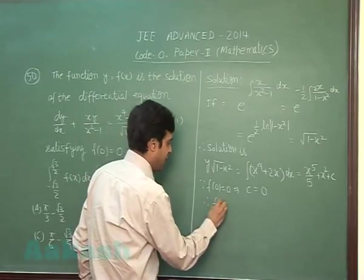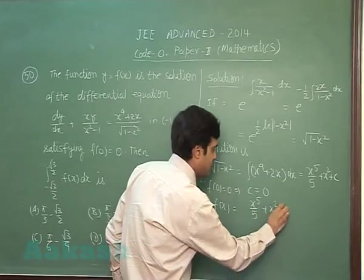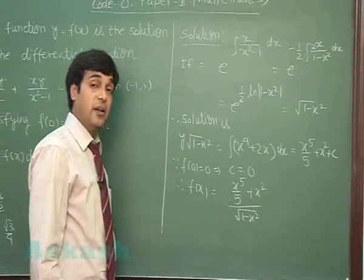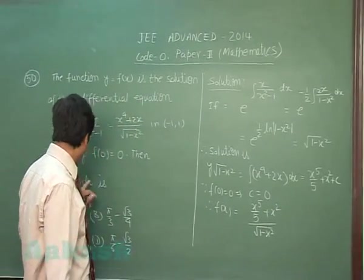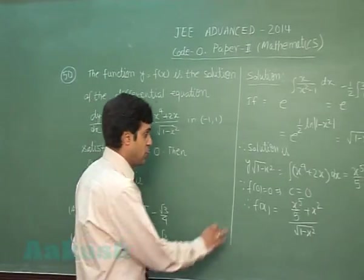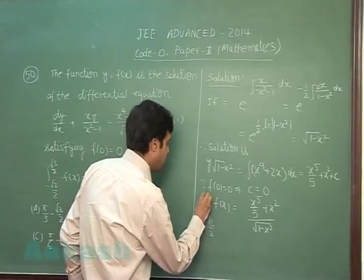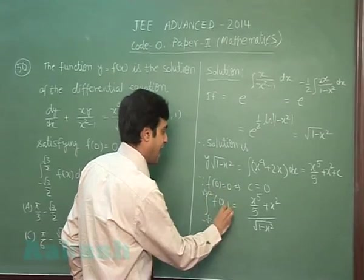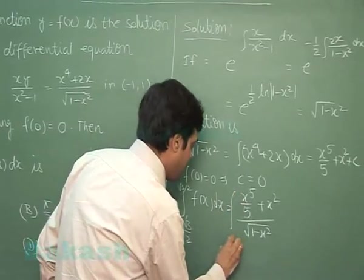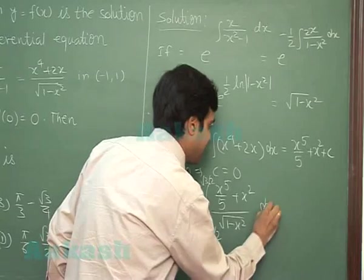Hence, the function f(x) is simply (x⁵/5 plus x²) divided by root of (1 minus x²). Now, the question is integral of this function within the boundaries minus root 3 by 2 to plus root 3 by 2. So, let's put it here. Minus root 3 by 2 to plus root 3 by 2 f(x) dx equals. Correct? Same. Minus root 3 by 2 to plus root 3 by 2 f(x) dx.